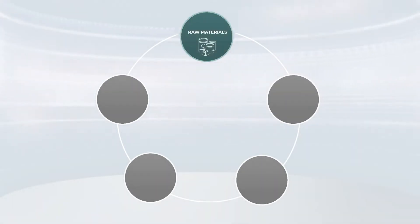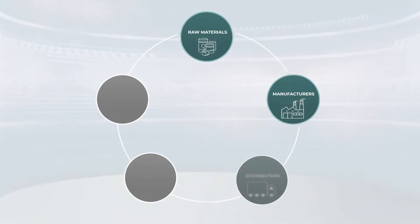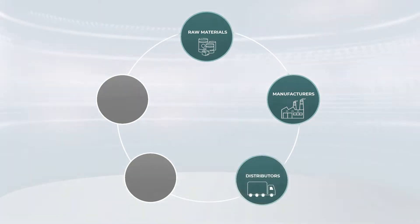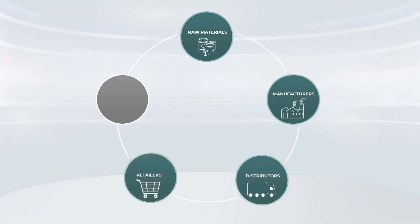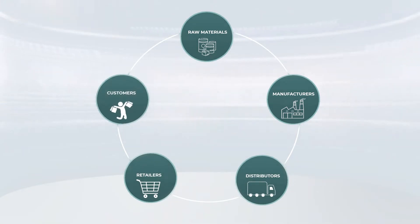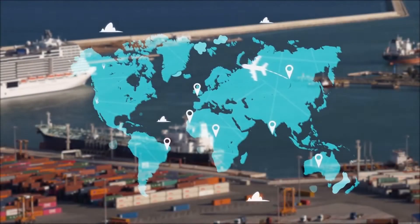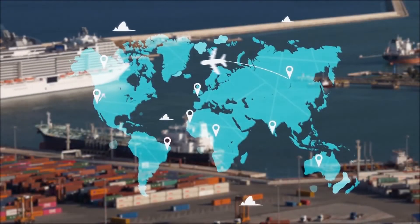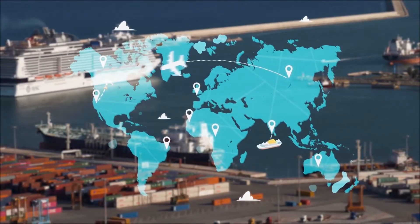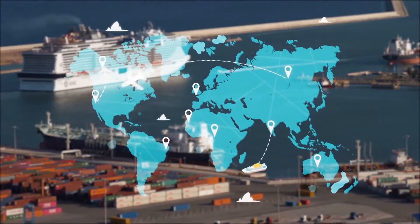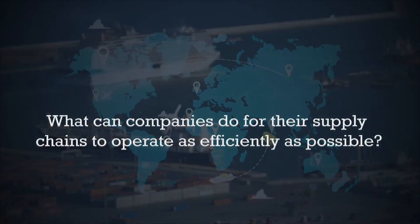Companies need to ensure their supply chain runs as efficiently as possible. Streamlined supply chains reduce production and distribution costs, which can help you better serve your customers. Supply chains can be long and complicated, with many interacting components all along the chain.